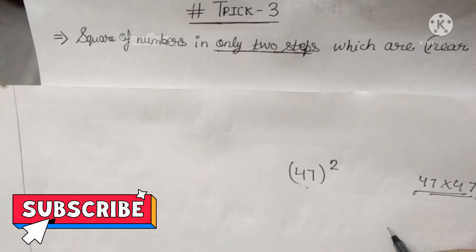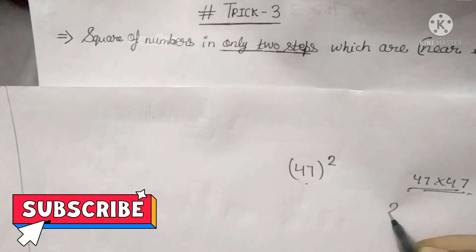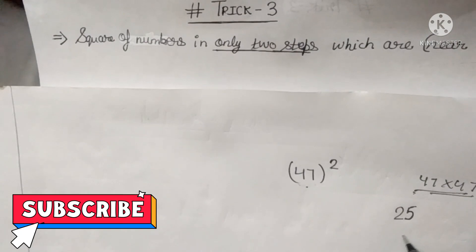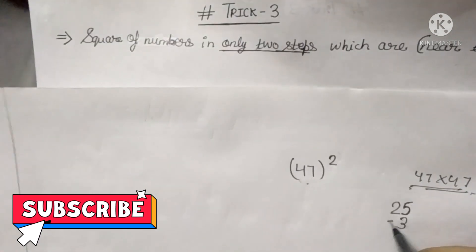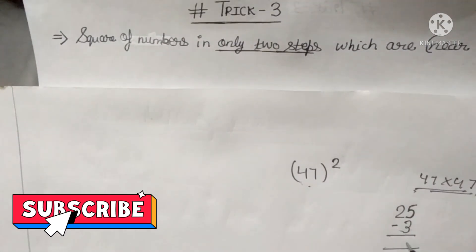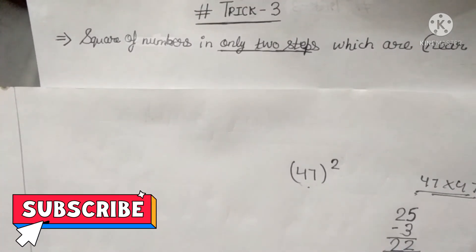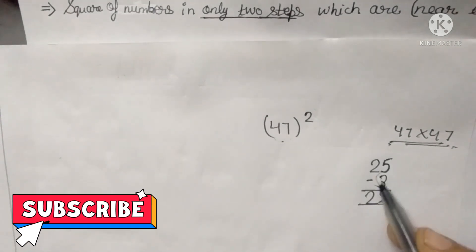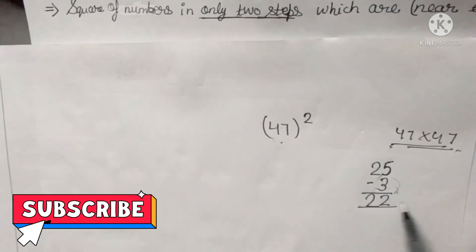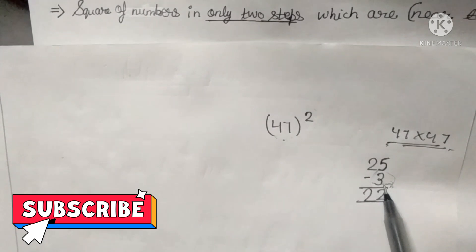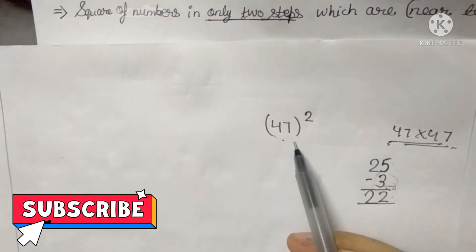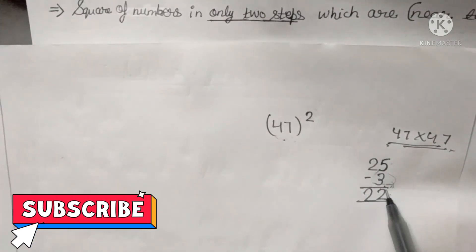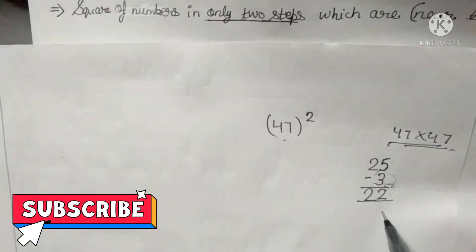So what we have to do? We will write 25 here and subtract 3 from 25, which gives 22. Why did we subtract 3 from 25? Because 47 is 3 less than 50, so we subtract 3 from 25, giving us 22.